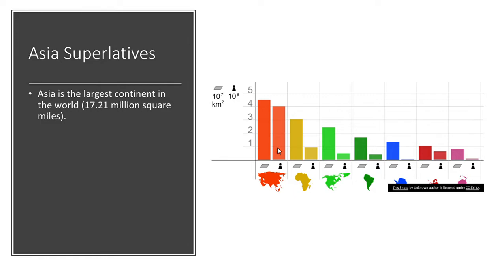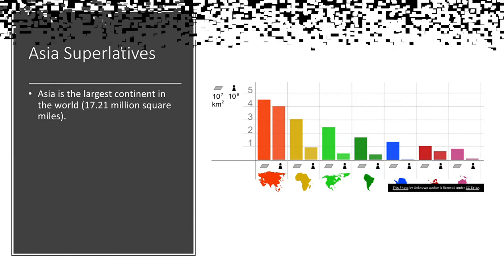We're going to get to this in more detail later. Compared to the other continents of the world, Asia's population is also kind of stunning, but even by area it is larger than Africa by almost six million square miles. The numbers here are in square kilometers, so it's pretty significant. You can see the other continents by size going on there.